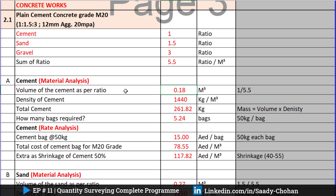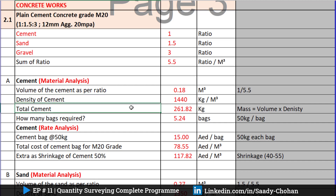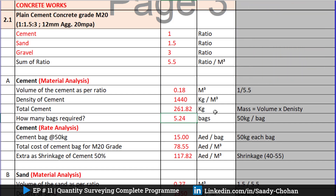The volume of cement as per the ratio is 0.18 cubic meters. Next, I use the density of cement — you can Google it — which is 1,440 kg per cubic meter. I simply multiply the total volume by the density, and I get a total of 261 kg. That's very simple — now we have the cement value in kilograms.